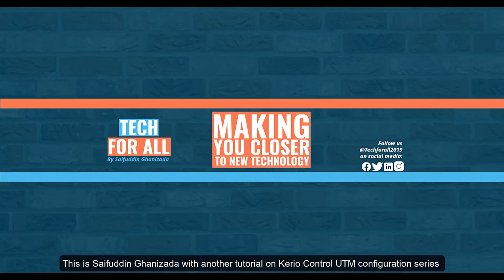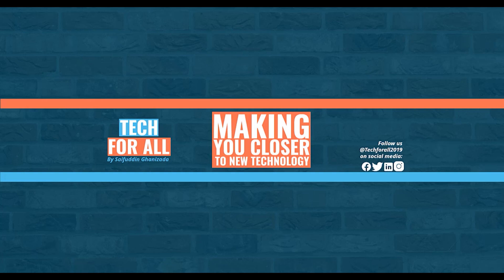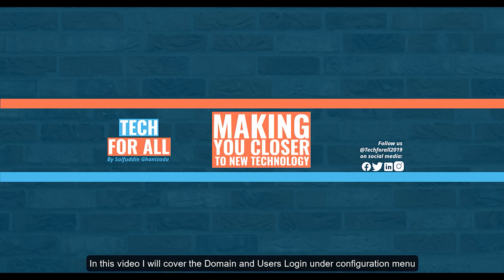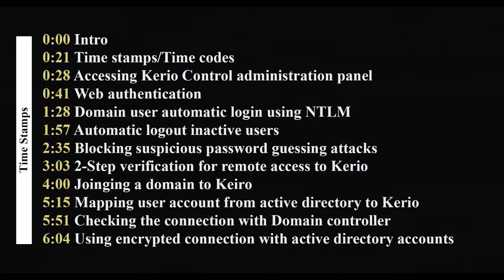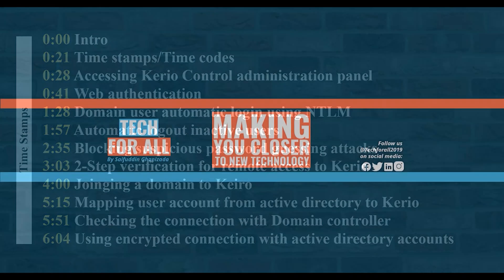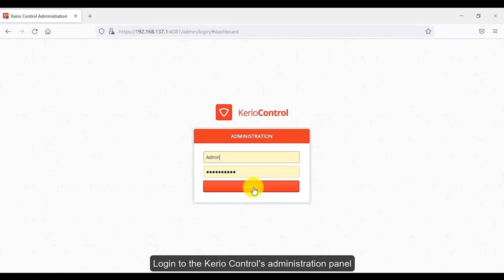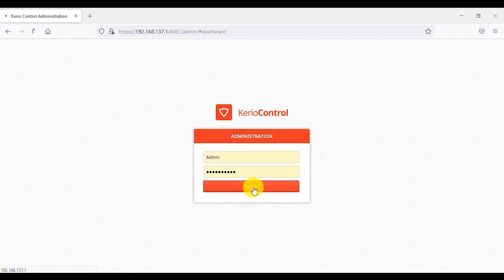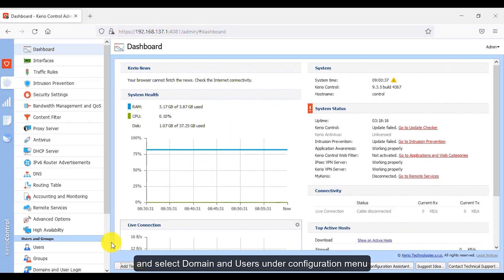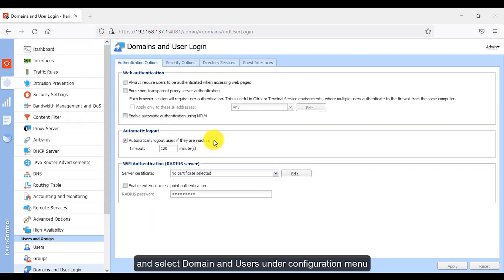Welcome back. This is Saifuddin Ghalinzada with another tutorial on the Kirio Control UTM configuration series. In this video, I will cover the domains and users login and their configuration menu. Let's start — open the web browser, login to the Kirio Control administration panel, and select Domain and Users and their configuration menu.